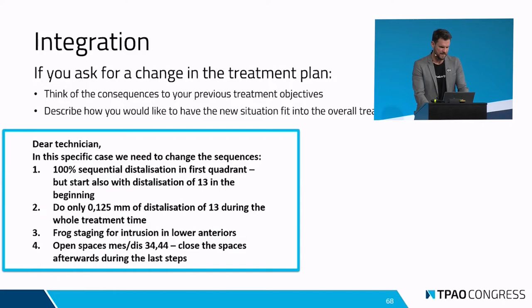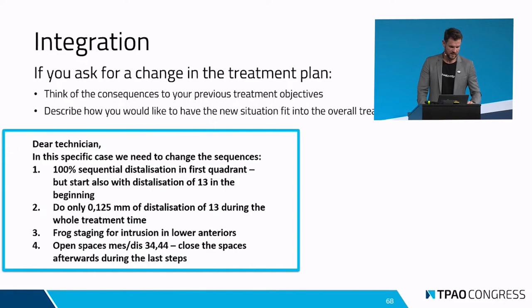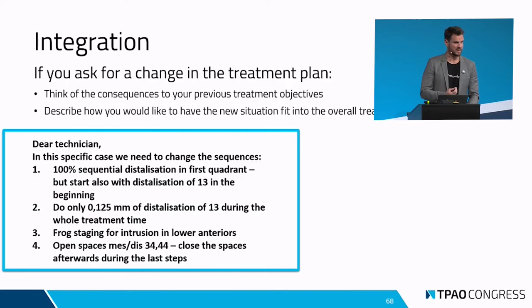Jetzt wird es ein bisschen komplizierter – es geht um einen etwas komplexeren Fall. Manchmal haben wir Fälle, wo wir spezielle Arten von Distalisierung anfragen. Beispiel: Wir hätten gerne 100% sequenzielle Distalisierung im ersten Quadranten, aber wir wollen mit der Distalisierung von 1,3 beginnen. Wir möchten nur 0,125 Millimeter Distalisierung von 1,3 während der gesamten Behandlungszeit. Ich zeige dazu den Behandlungsplan und warum man sich solche Dinge überlegen muss, weil wir müssen hier immer wieder den Kompromiss eingehen.